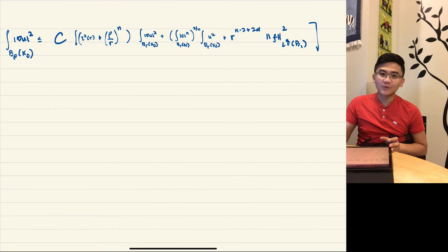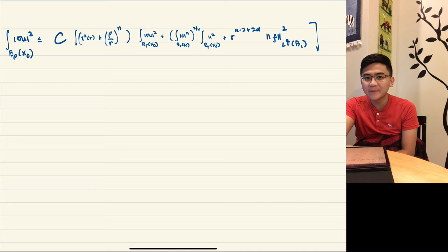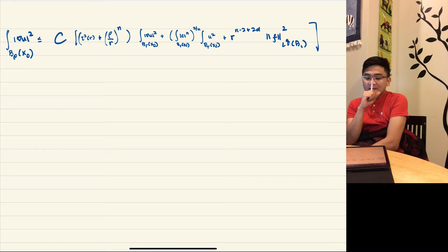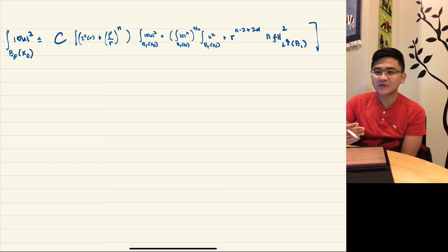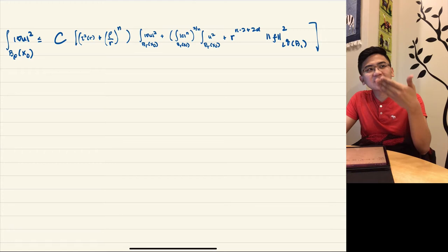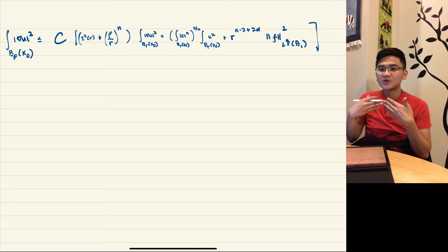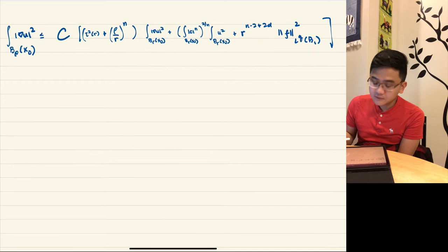Welcome to the last part of the video. We're going to talk about the bootstrap argument that gives us the gradient estimate we want. This bootstrapping technique often happens in analysis where you do a trick, it gives you something that looks like what you need but not enough, so you repeat the argument — creating a kind of feedback loop where you get an improvement each time. Do it finitely many times and you get the result you want.